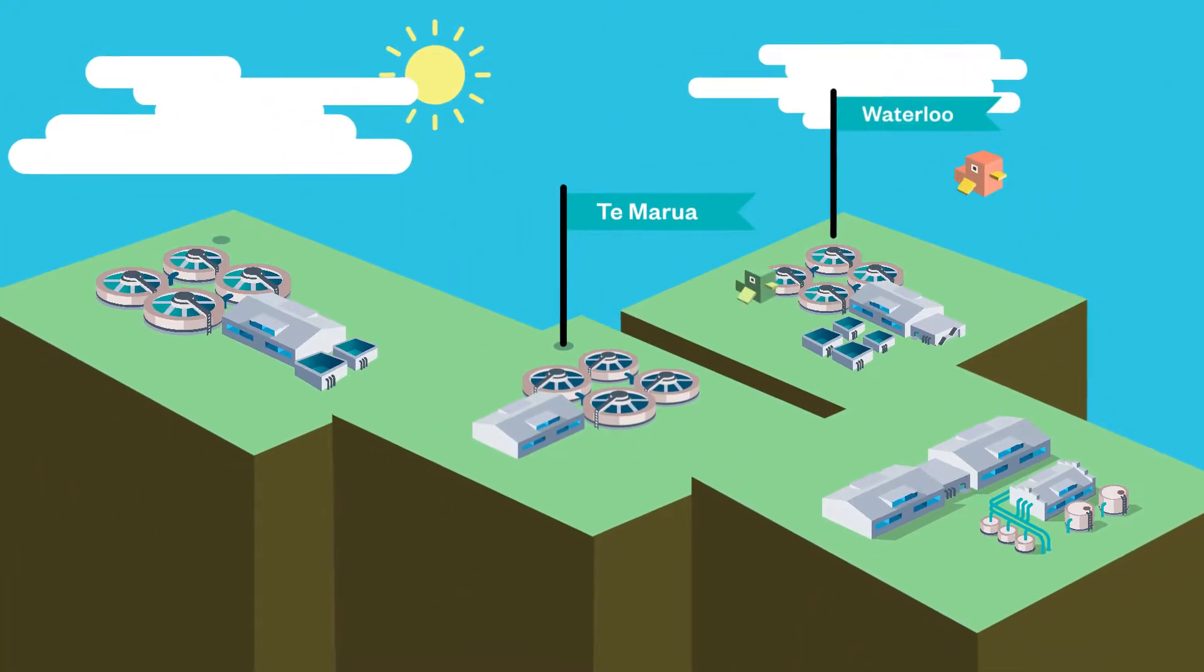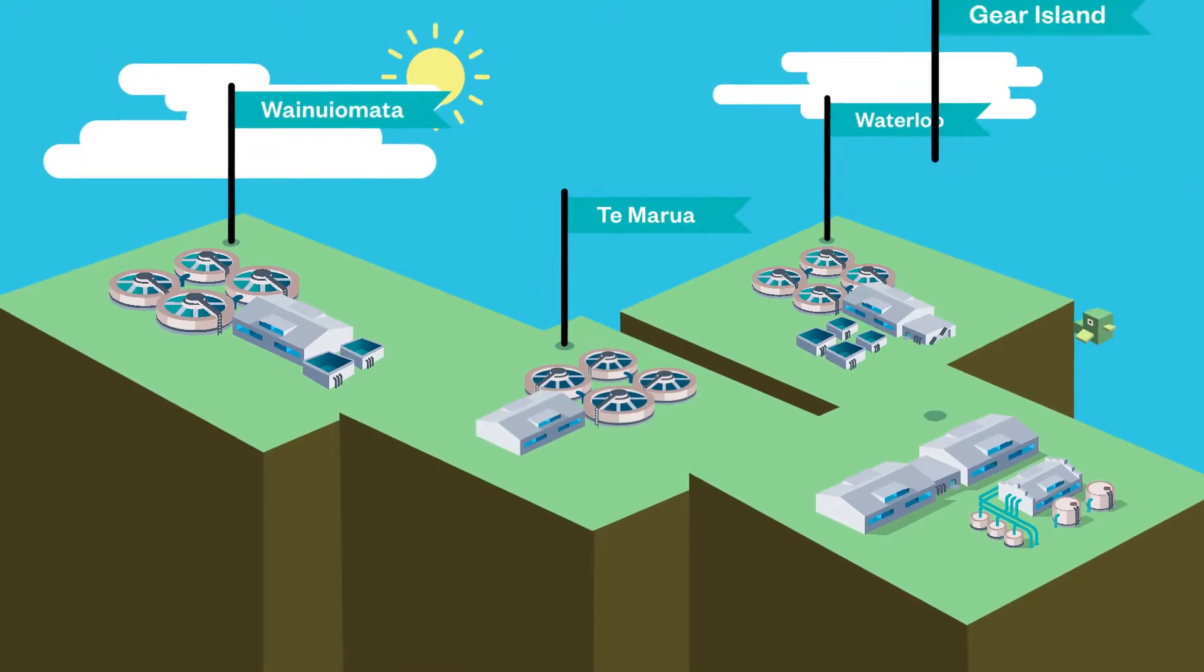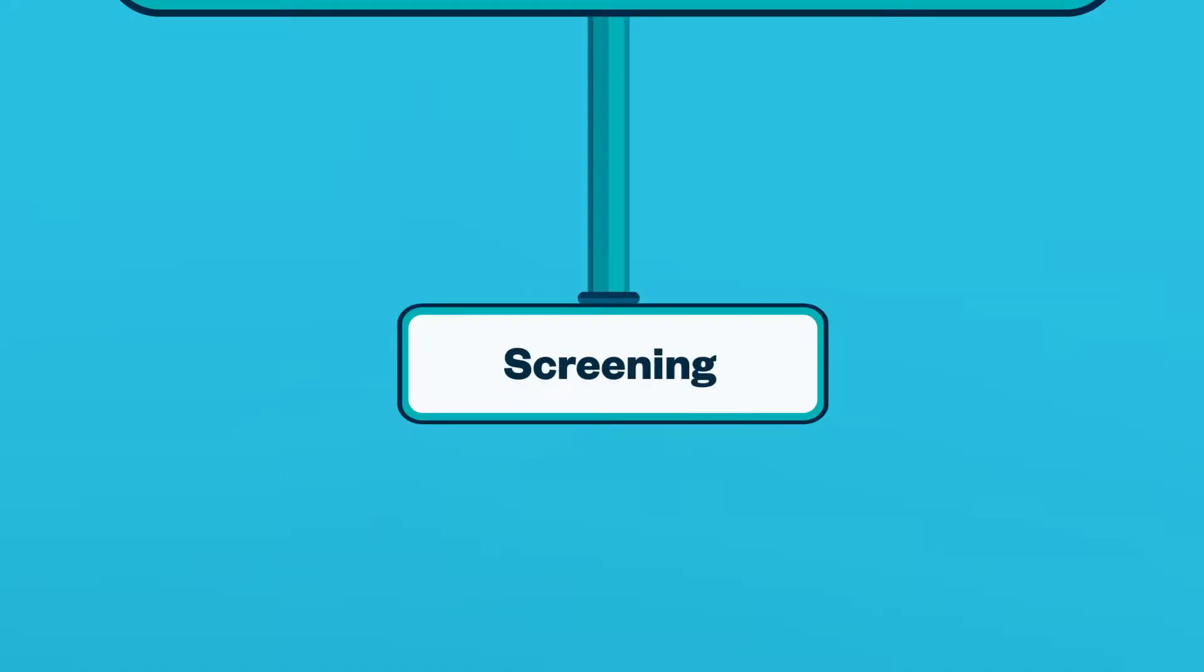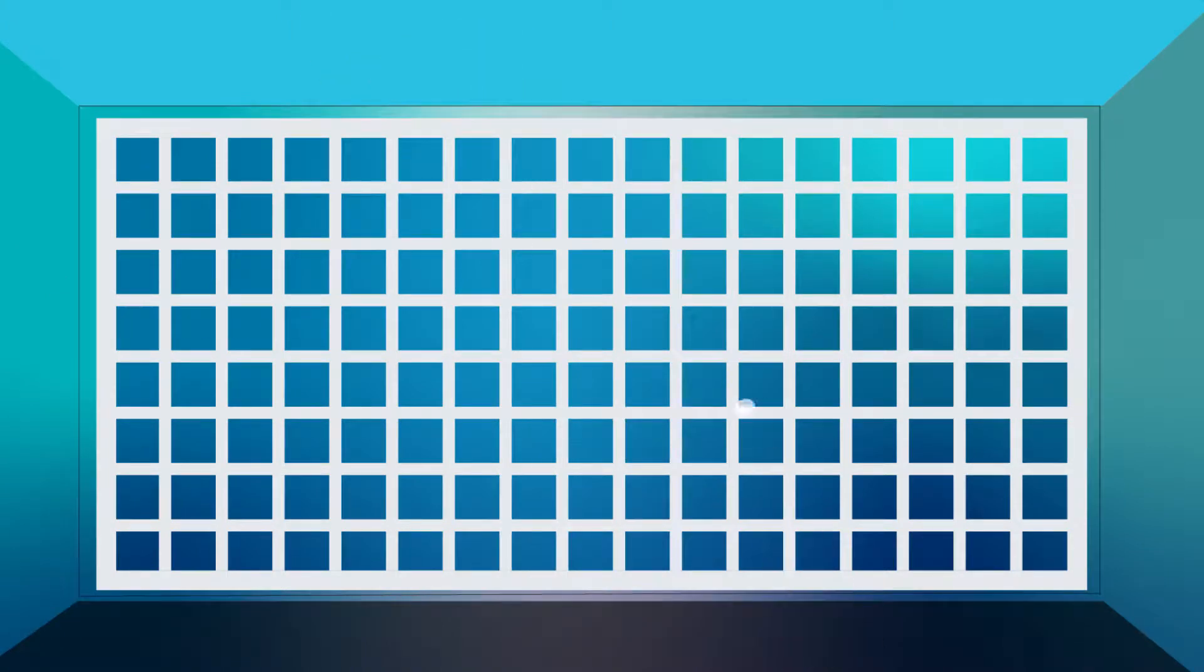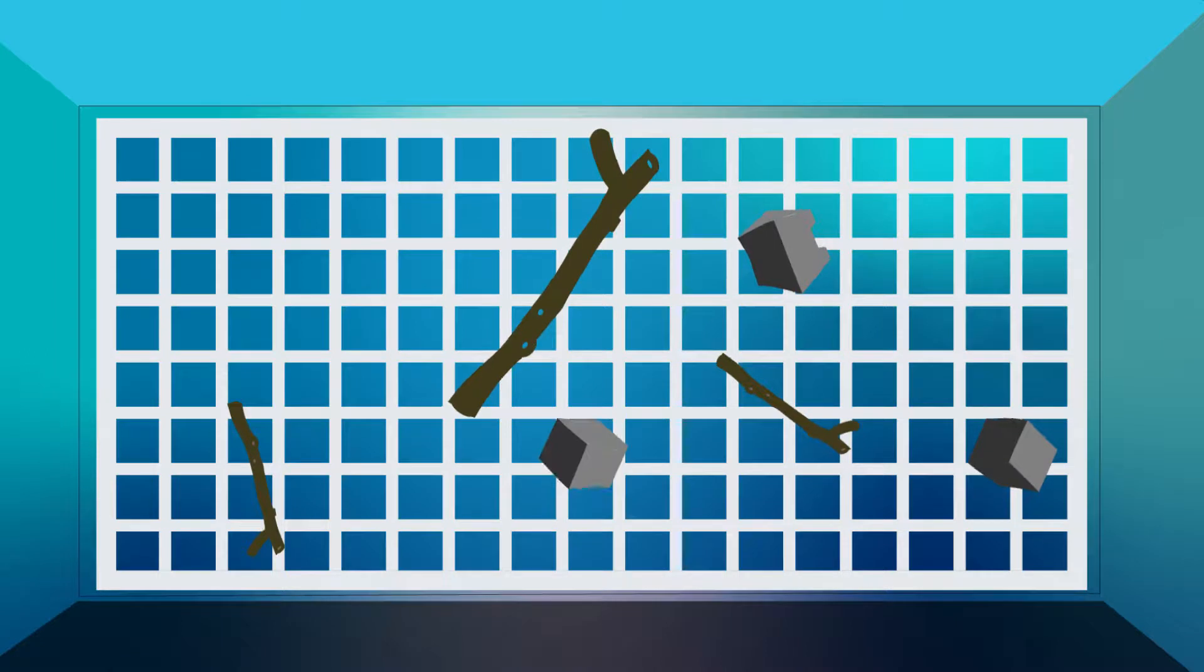Te Marua, Waterloo, Wainui o Mata and Gear Island. Our river intakes have screens at their openings which act like a sieve, stopping any large rocks, sticks and other debris from entering the system.